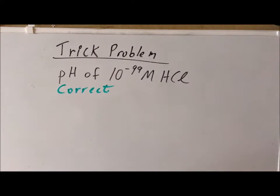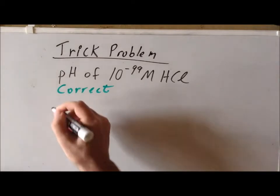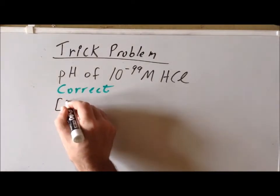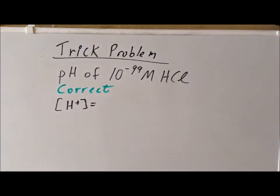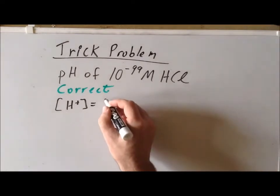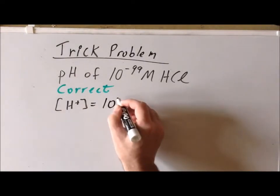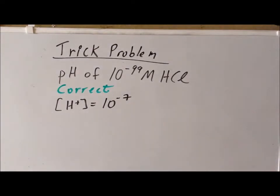And to do this, we note that in any acidic solution, there are actually two sources of hydrogen ion. One of the sources of hydrogen ion is just from the dissociation of water. And we know that in a solution of pure water, the hydrogen ion concentration is going to be 10 to the minus 7 molar. So that's just the hydrogen ion that we get from the autodissociation of water.